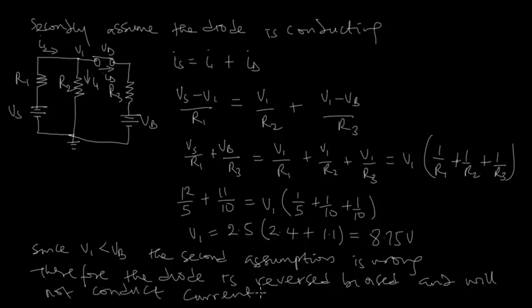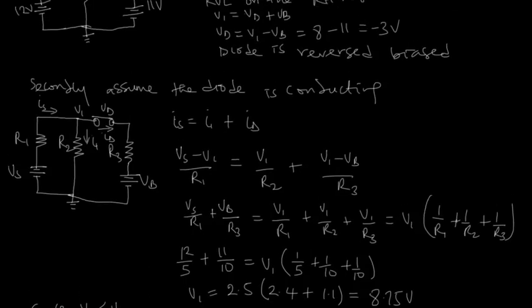So that's how to solve a problem where you have an ideal diode in the circuit. And you want to determine whether the diode conducts current or not. So we first assume that it does not conduct. Like we saw in this case, we assume that the diode does not conduct.